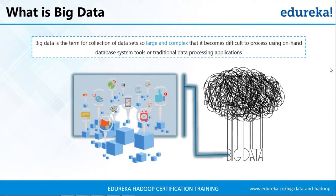Big data is a term for a collection of data sets so large and complex that it becomes difficult to process using on-hand database system tools or traditional data processing applications. The real problem is there is too much data to process. When the traditional systems were invented, we never anticipated we would have to deal with such enormous amounts of data. It's like a disease — you don't change your body orientation when you get infected, you cure it with medicines. Now the question is: how do we classify some data as big data and know which kind of data will be hard to process? We have the five V's to tell us that.